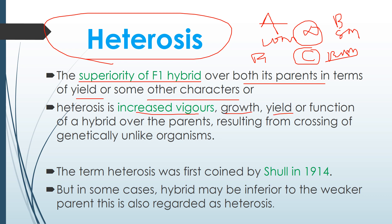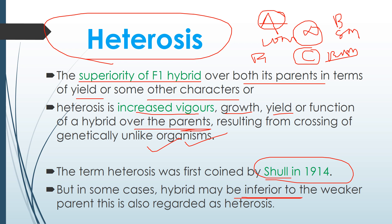Heterosis is otherwise defined as increased vigor, increased growth, increased yield, or function of a hybrid over its parents. It always results from crossing genetically unlike organisms — two parents with different genetic compositions. The term heterosis was first coined by Shull in 1914. Note that a hybrid may also be inferior; even the production of an inferior hybrid is considered heterosis.